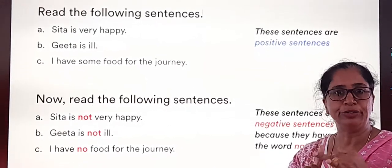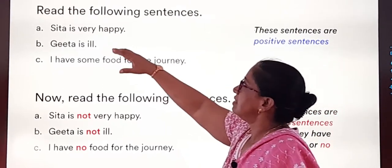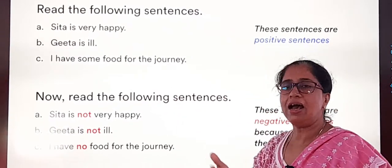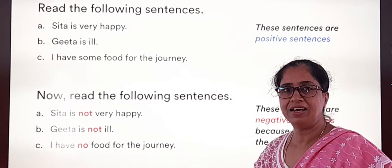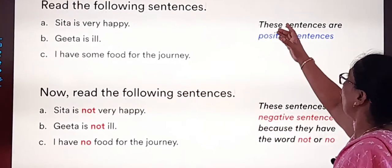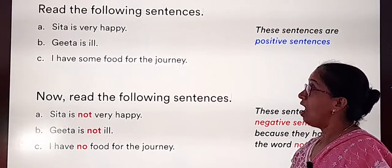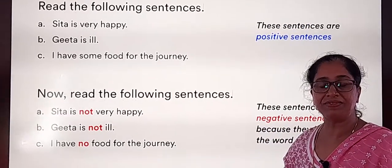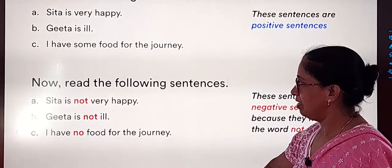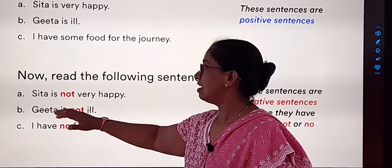Let's read these sentences: Sita is very happy. Gita is ill. I have some food for the journey. Are there any negative words in these sentences? No. So we call these positive sentences because there are no negative words. Now, to make a positive sentence into a negative sentence, simply put the negative word 'no' or 'not'.